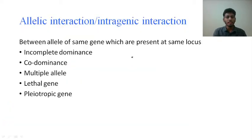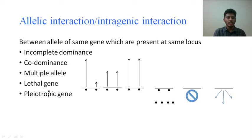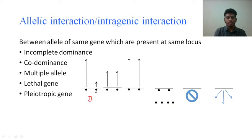Gene interaction involves the effect of alleles and non-alleles on the normal phenotypic expression of a gene. Normally a gene gives a particular phenotypic character, but the alleles start interacting and give some other different character — that is what we study under gene interactions. Taking up allelic interaction first: allelic interaction happens between alleles present at the same locus. Under allelic interaction we have five concepts: incomplete dominance, co-dominance, multiple alleles, lethal genes, and pleiotropic genes. According to the law of dominance, among two alleles the one expressed completely is dominant and the other unexpressed one is recessive.